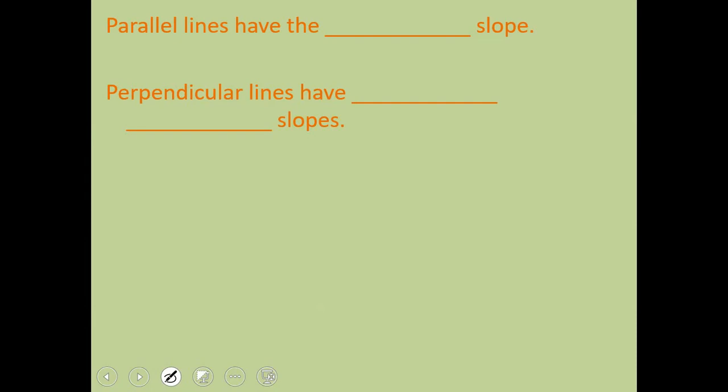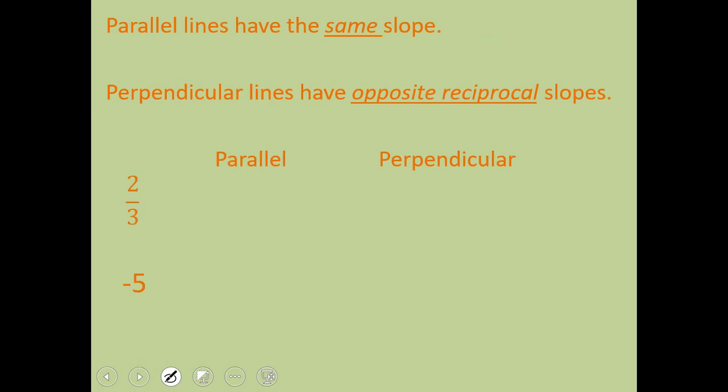All right, talking about parallel and perpendicular slopes. Again, this is a big middle school math, Algebra 1 concept. Hopefully you can remember that parallel lines never intersect, and perpendicular lines are going to intersect and make a 90-degree right angle. Parallel lines have the same slope. That's why they do not intersect. And again, perpendicular lines are going to make a right angle because they have opposite reciprocal slopes.